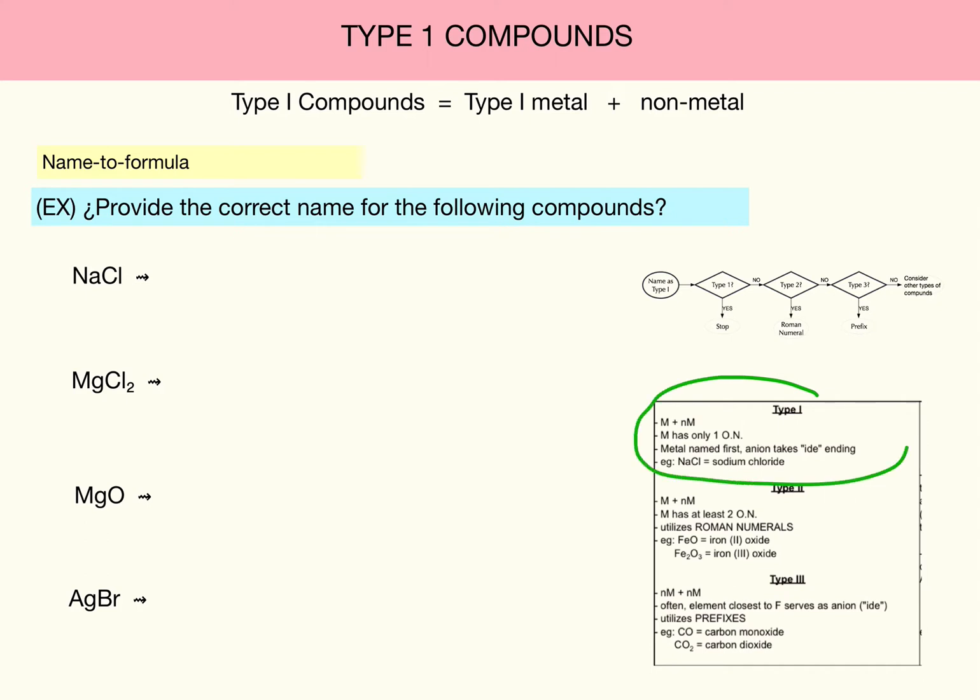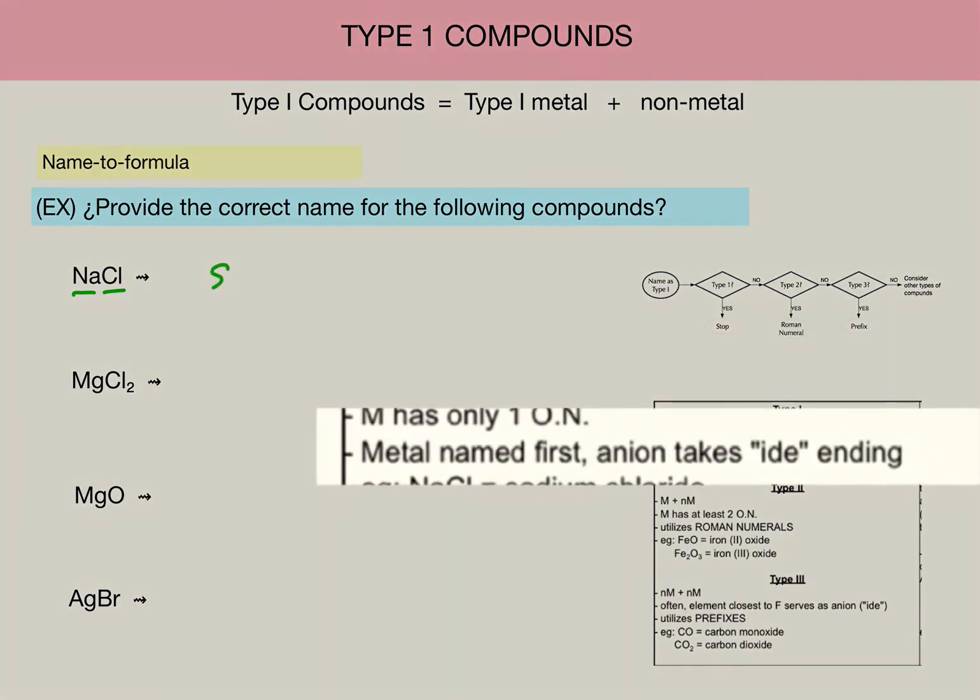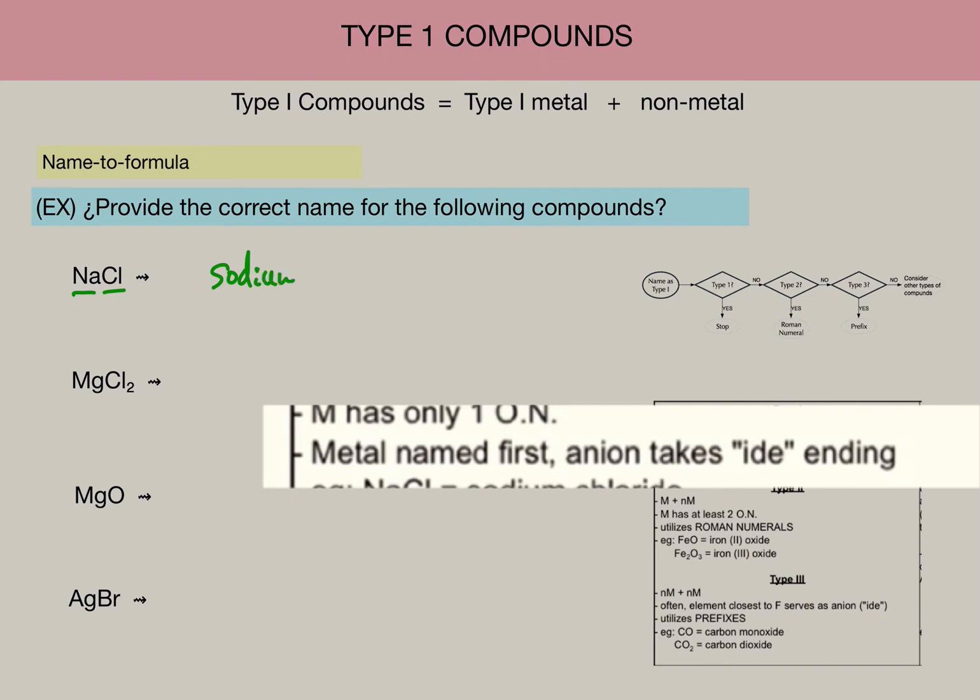So by example, let's apply these rules. Let's name the four compounds on the left. The first thing I do is identify the binary pieces, the metal and the non-metal. I just name the metal as the metal, sodium. Just name the metal. And then for the second element, you name it normally, except you change the ending to chloride, so instead of chlorine, it would be chloride. And that's all you do. Congratulations. You just named your first compound.